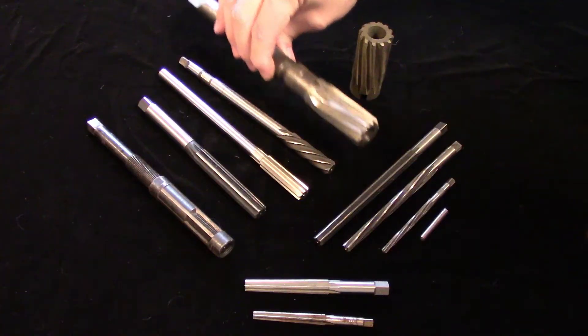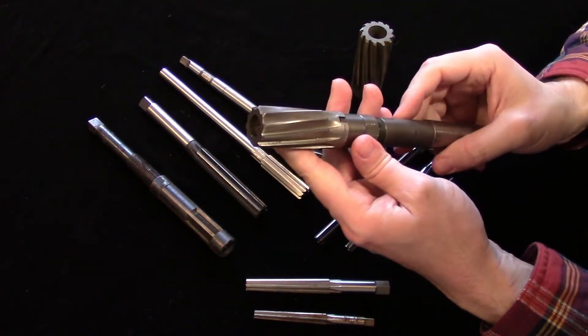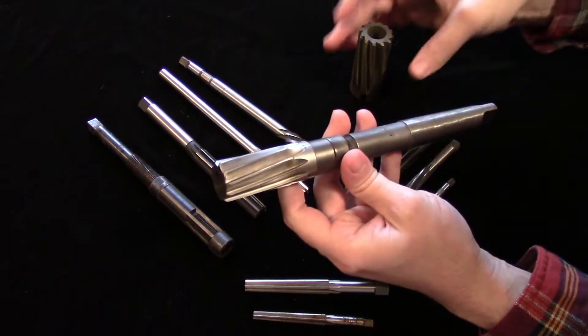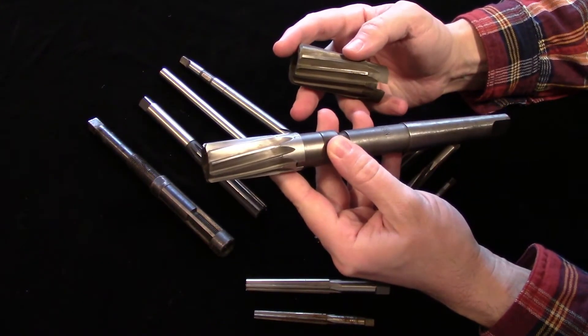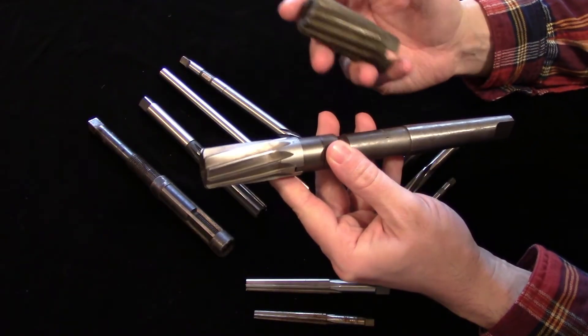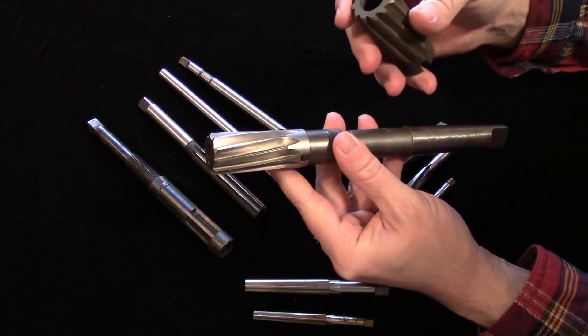Like most tooling, reamers start to get quite expensive in larger sizes, so large reamers are often sold as shell reamers. One shank is used to hold a range of interchangeable reamer shells. This not only makes the tooling more affordable, but it takes up far less space than a drawer full of very large reamers.